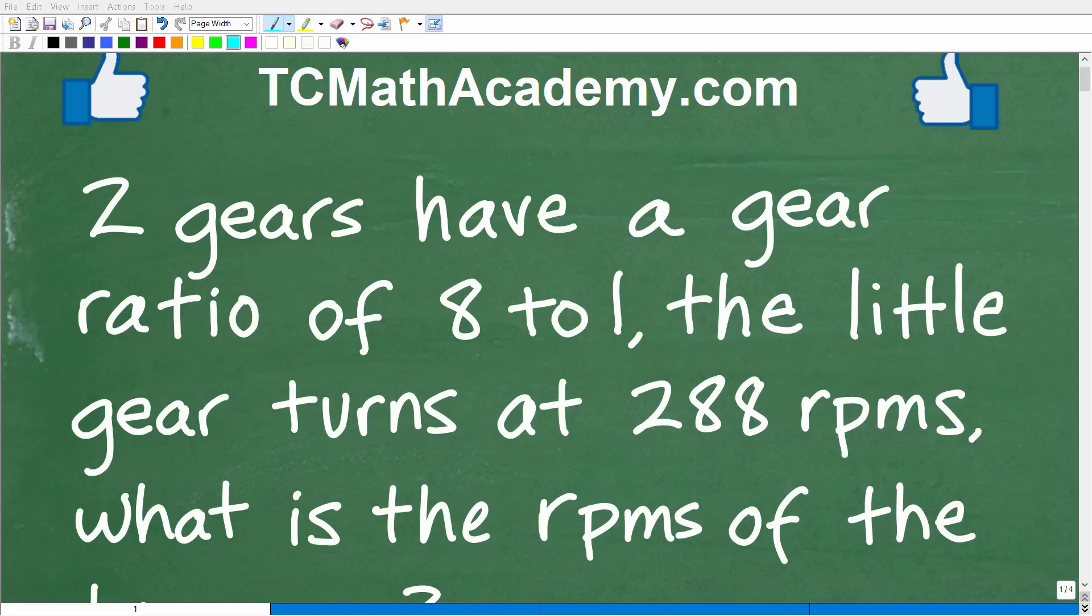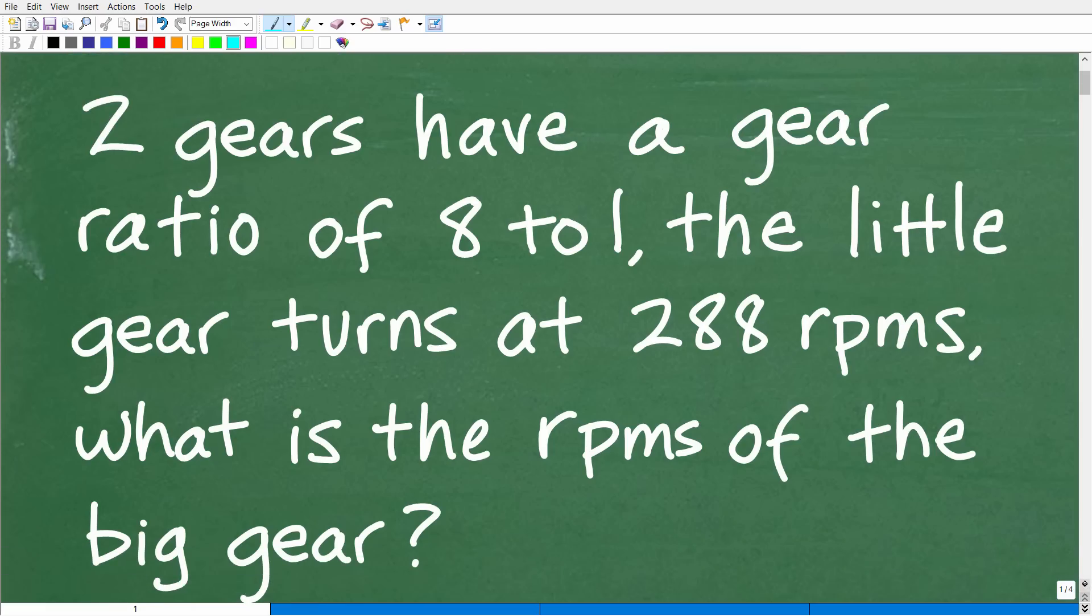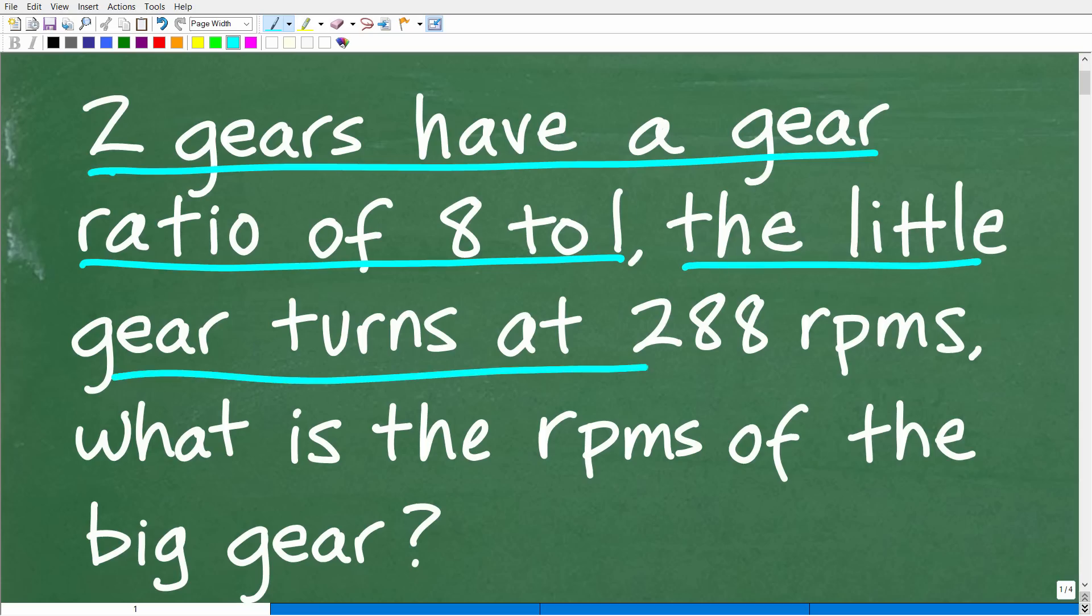Okay, so get ready to put your math skills to work because I have an interesting little math word problem here for you. Matter of fact, let me read the problem. It is the following: Two gears have a gear ratio of 8 to 1. The little gear turns at 288 RPMs. What is the RPMs of the big gear?